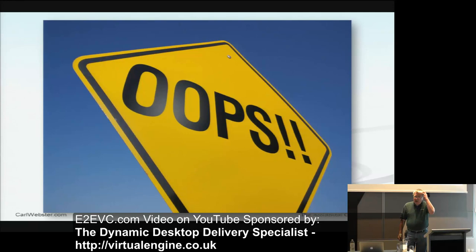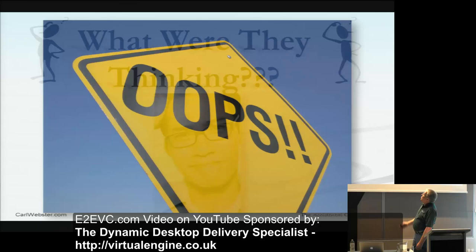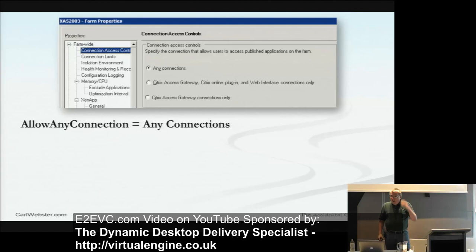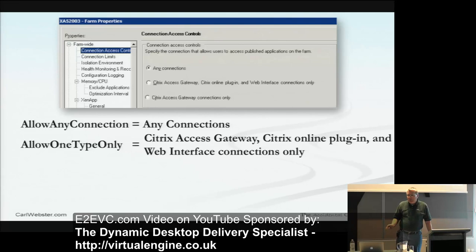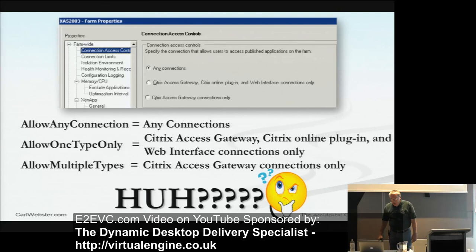Then I ran into things like, 'What were they thinking?' For farm properties connection access control — it's only got three settings. You've got 'allow any connections equals any connections.' Then 'allow one type only' — you'd think that's Citrix access gateway connections only, but it's the one that has three. And then you've got the thing where if you disable something, you've actually enabled the checkbox. So if it's disabled, PowerShell returns that it's enabled. That's almost the same as a lot of Microsoft Group Policy, where you enable something to disable, and disable something to enable.